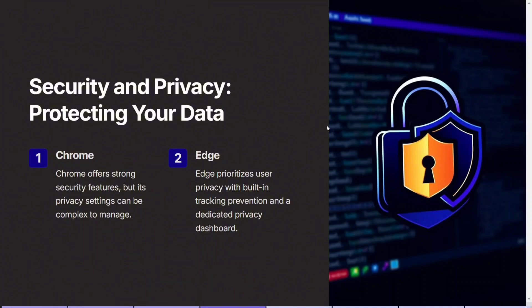Now let's talk about security and privacy — how do these two applications protect our data? Security and privacy are critical considerations for any browser user. Chrome provides robust security features including sandboxing and frequent updates, but its privacy settings can be complex and require fine-tuning for optimal protection. Microsoft Edge, in contrast, places a strong emphasis on user privacy right out of the box. It comes with built-in tracking prevention and a user-friendly privacy dashboard, allowing users to easily manage and customize their privacy preferences, giving users more control over their data with fewer adjustments needed.